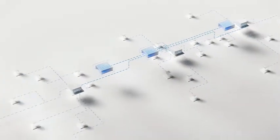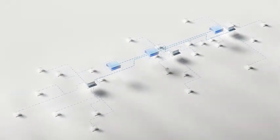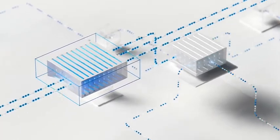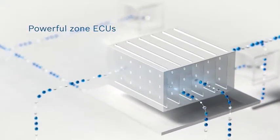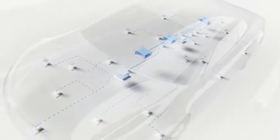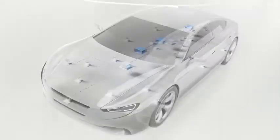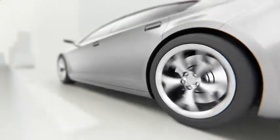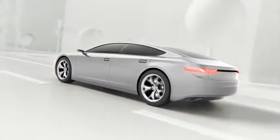This type of architecture uses only a few immensely powerful cross-domain vehicle computers in combination with zone ECUs. The resulting centralization of the EE architecture makes the complexity manageable and enables the development of the vehicle into an IoT device on wheels.